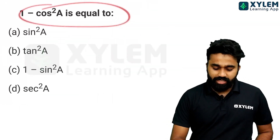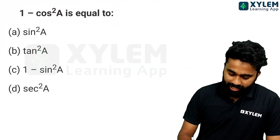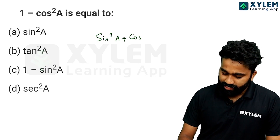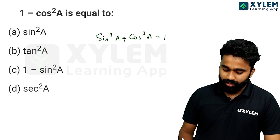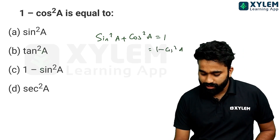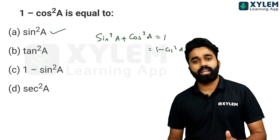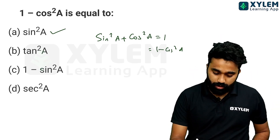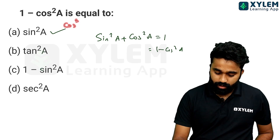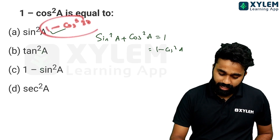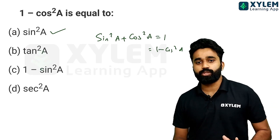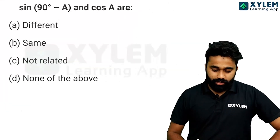Next: 1 minus cos square i is equal to what? We know sin square i plus cos square i equals 1. So 1 minus cos square i is equal to sin square i. That is the answer.